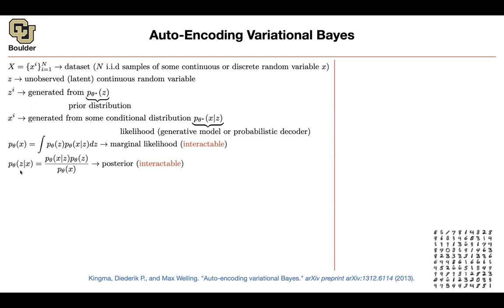Similarly, your posterior is intractable to compute because the marginal likelihood P(theta) shows up in it. The likelihood you can compute, the prior distribution you can compute, but the marginal likelihood you cannot — it's intractable — and the posterior is also intractable. So we need to somehow get rid of the posterior. Before I go into the details of how to solve that, I promised to mention the applications: image denoising, inpainting, and super resolution.